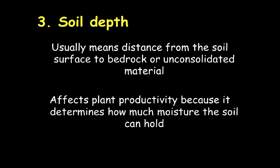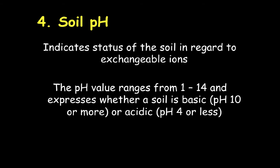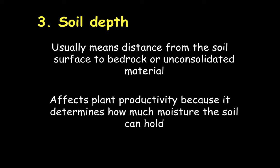Soil depth is the third component we're going to look at, and this refers to the distance from the soil surface to the bedrock. This becomes important for rooting of our plants on rangeland. The productivity of a plant is going to be directly related to its ability to penetrate different horizons of the soil, and its productivity is also going to be affected by how much moisture the soil has the ability to hold.